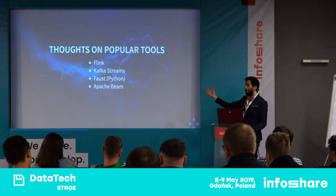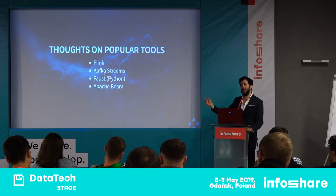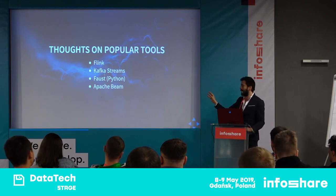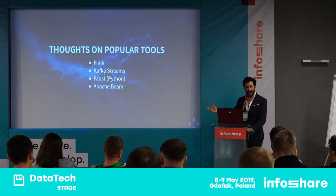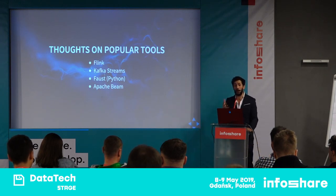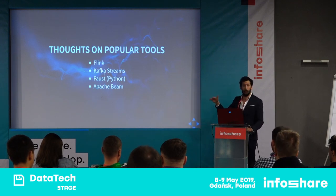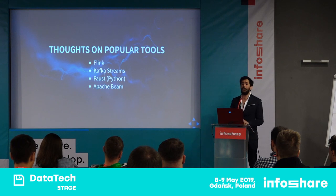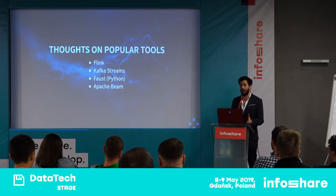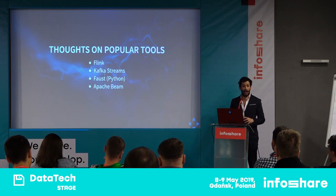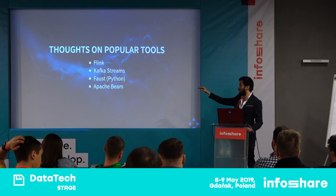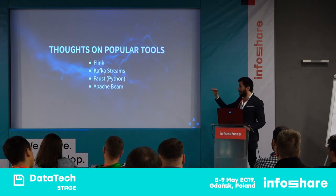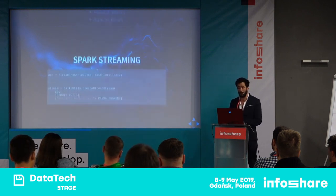Faust is primarily written in Python and borrows a lot of concepts from Kafka Streams — it's really interesting to use. Unfortunately it's not yet fully production-ready and has a lot of bugs, but if you're looking to get started in the streaming context I recommend trying it out. The last one is Apache Beam, which started with Google and tries to unify different interfaces using backends — Spark for batch processing and Flink for stream processing.